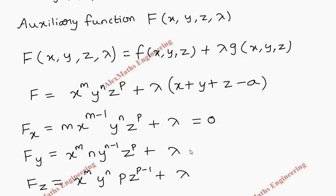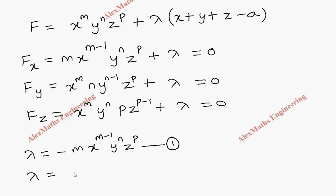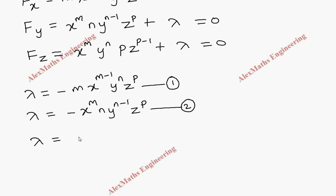Following the working procedure, we equate each partial derivative to zero. From the first equation, λ = −m·x^(m−1)·y^n·z^p. From the second equation, λ = −x^m·n·y^(n−1)·z^p. From the third equation, λ = −x^m·y^n·p·z^(p−1).